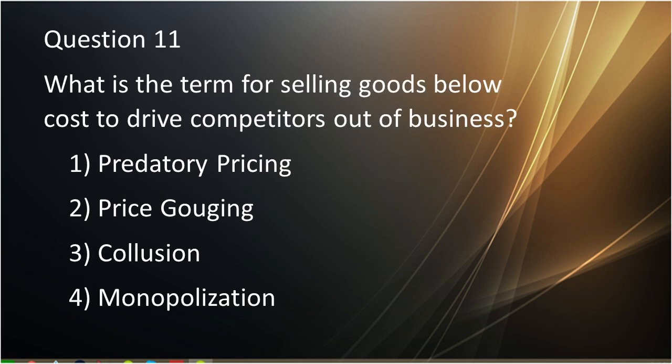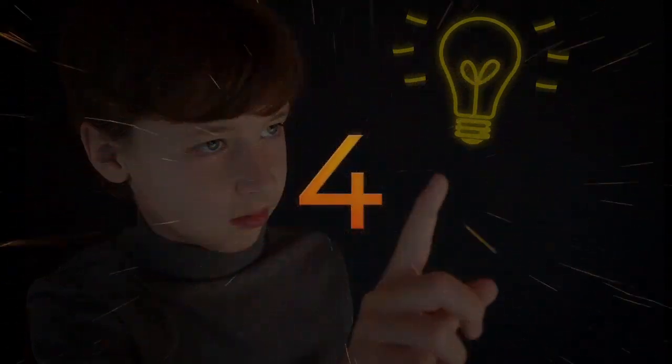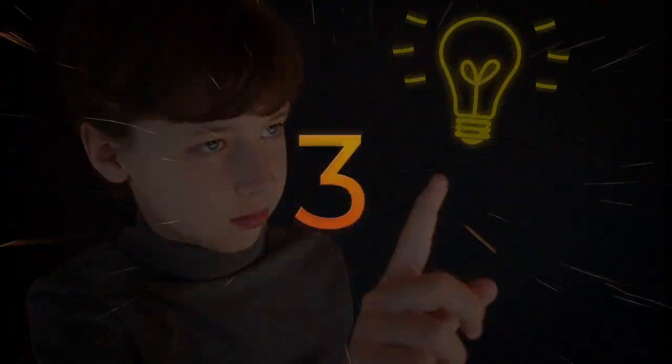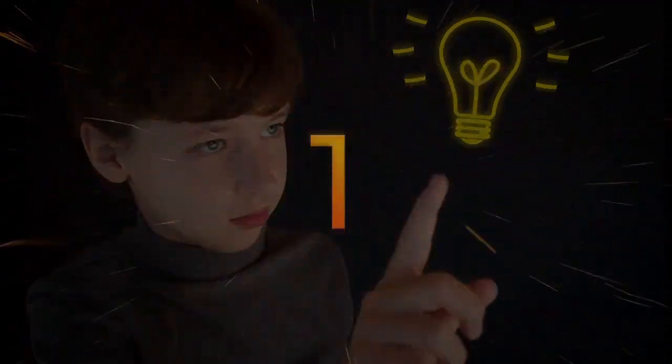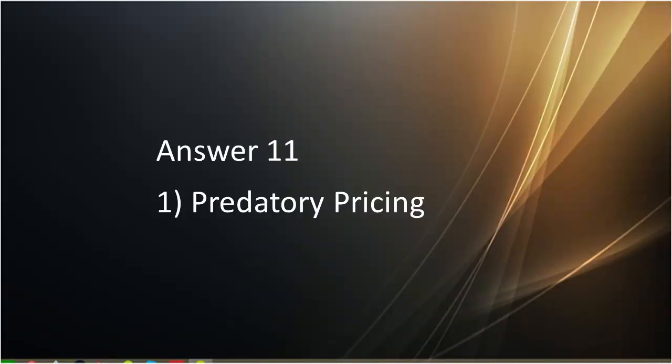Question number eleven: What is the term for selling goods below cost to drive competition out of business? First is predatory pricing. Second is price gauging. Third is collision. Fourth is monopolization. Answer to question number eleven is predatory pricing.